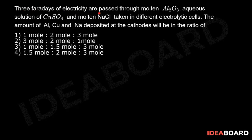Three faradays of electricity are passed through molten Al2O3, aqueous solution of copper sulfate, and molten NaCl taken in different electrolytic cells. The amount of aluminium, copper, and sodium deposited at the cathode will be in the ratio of...